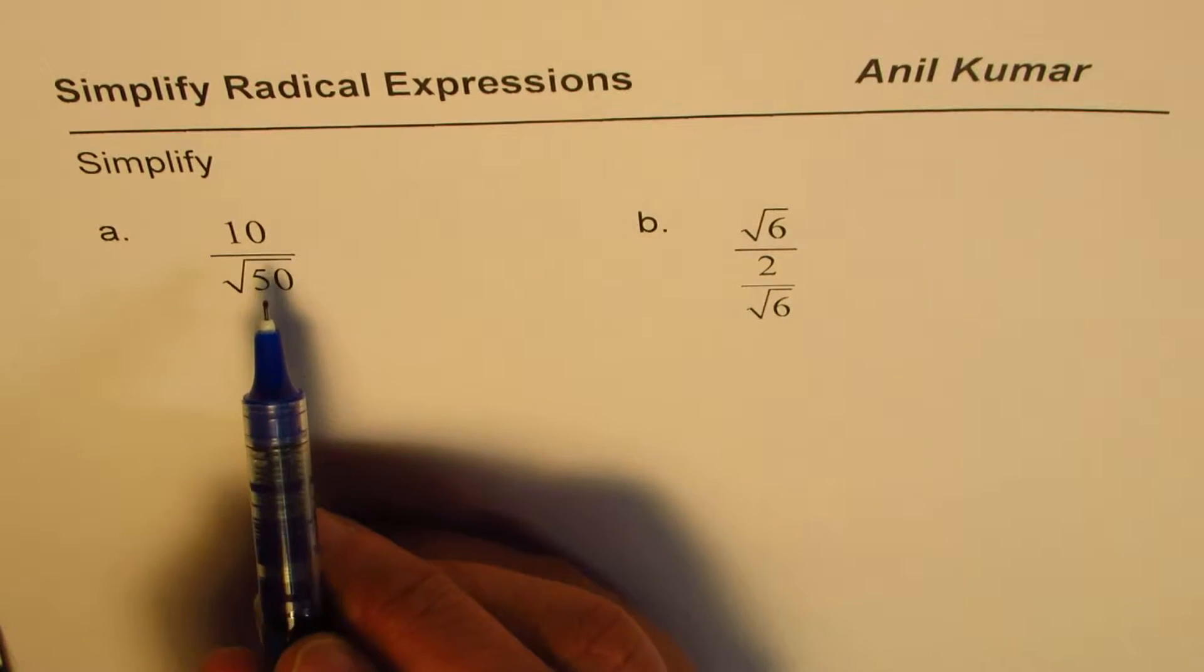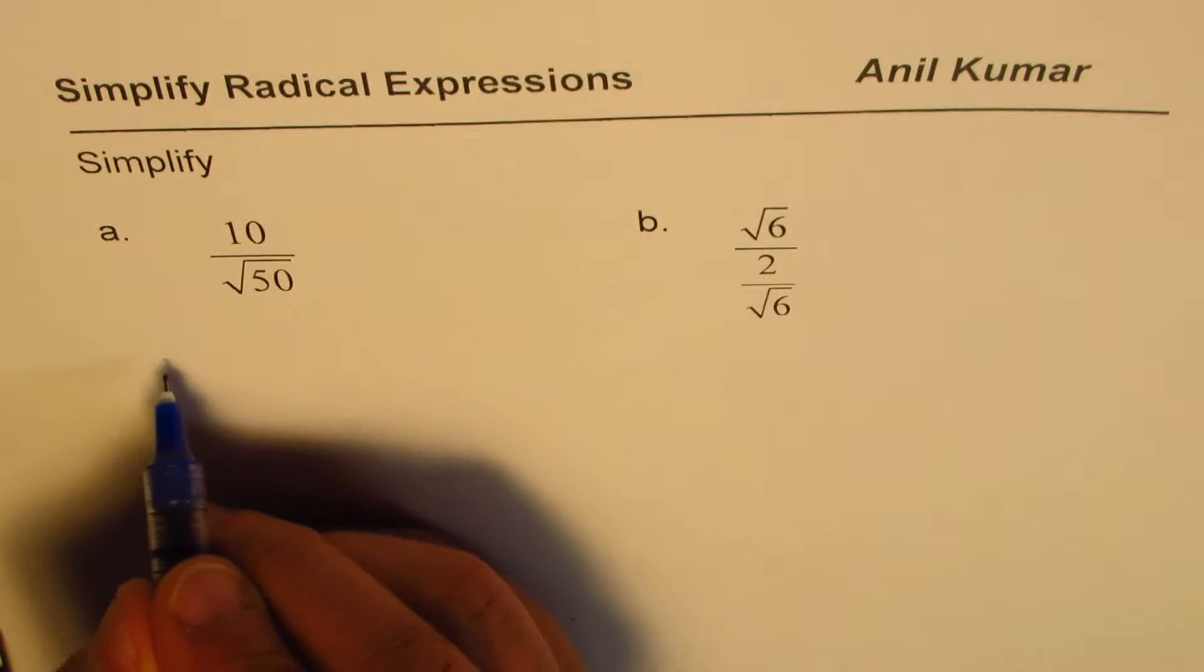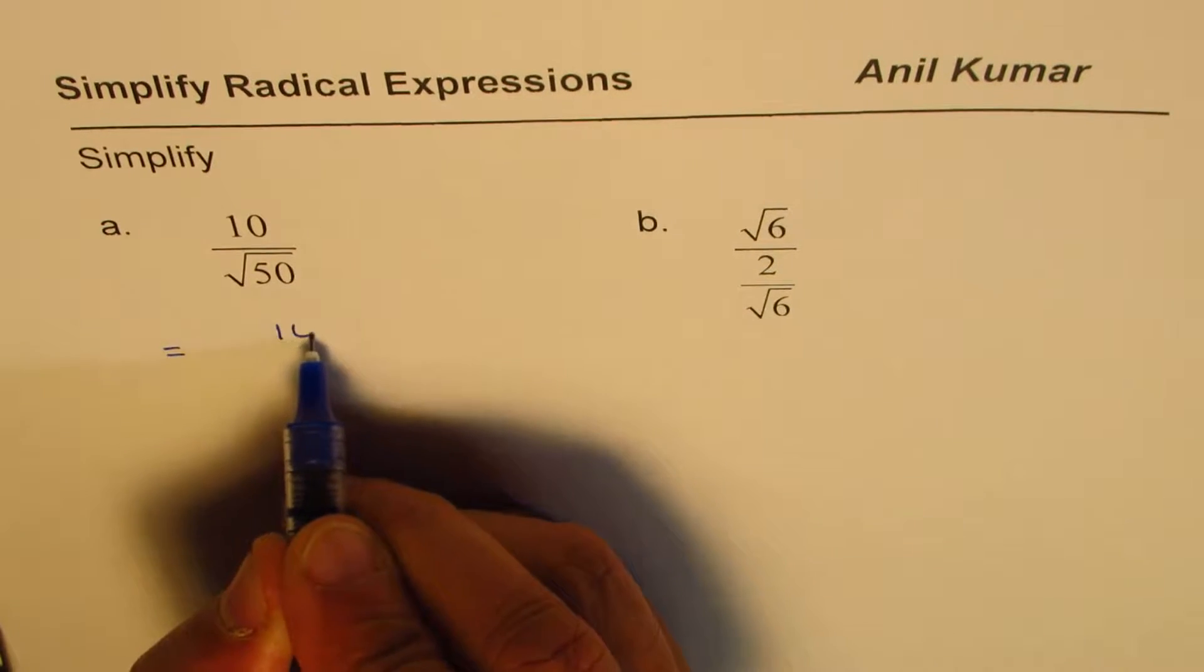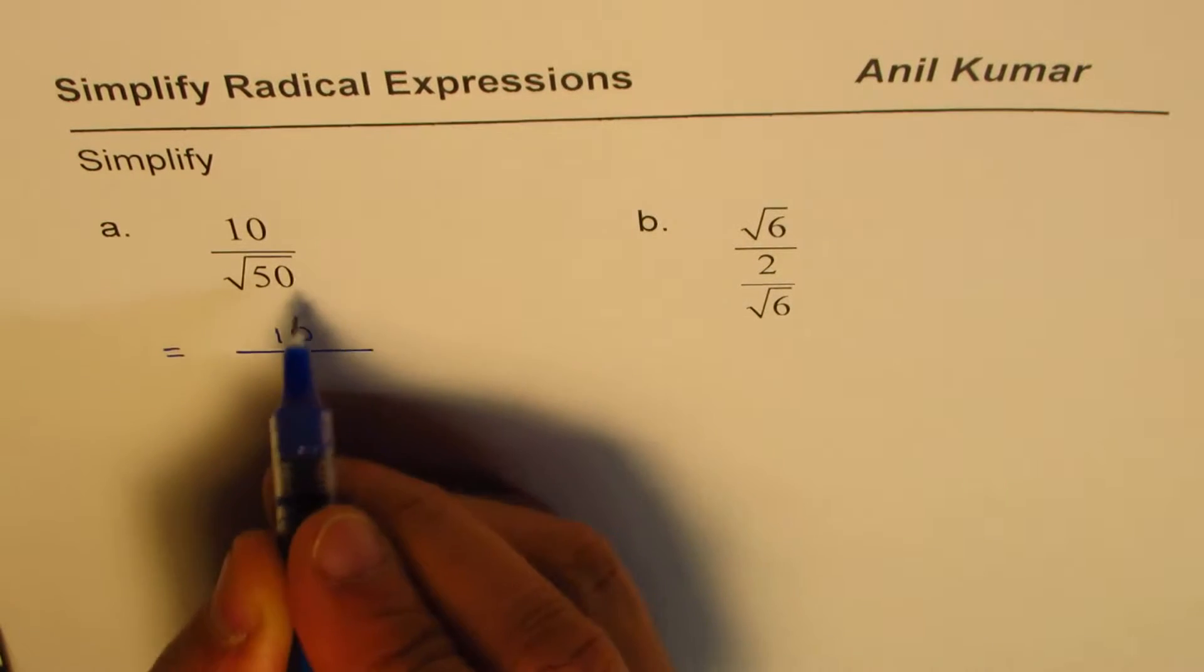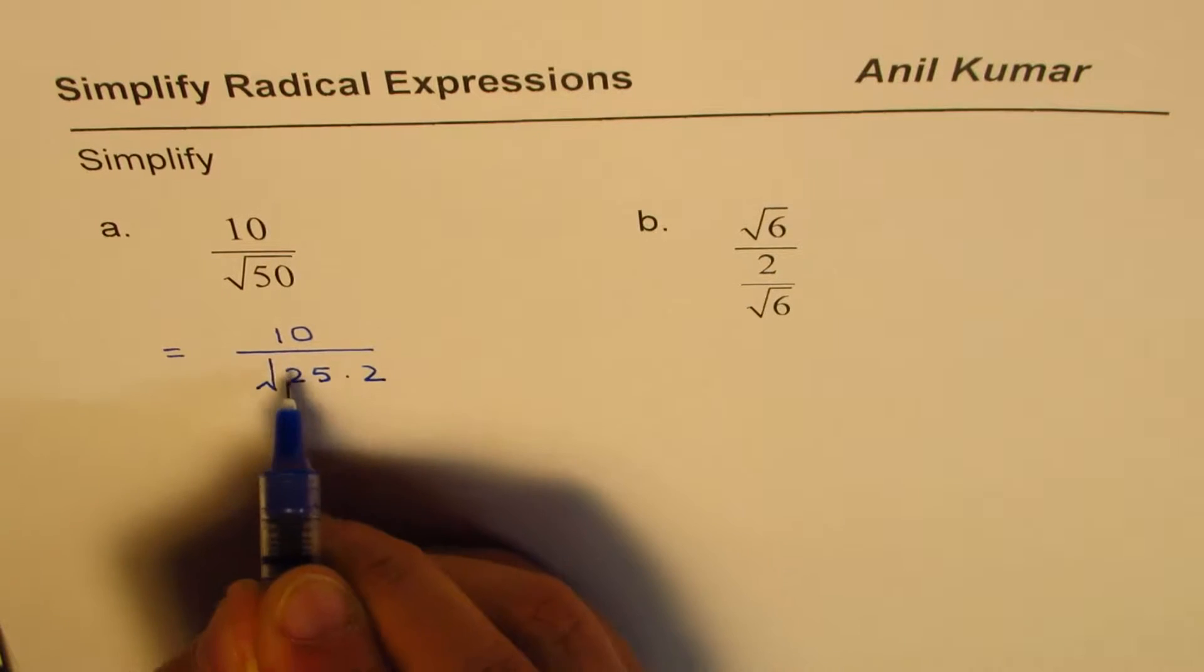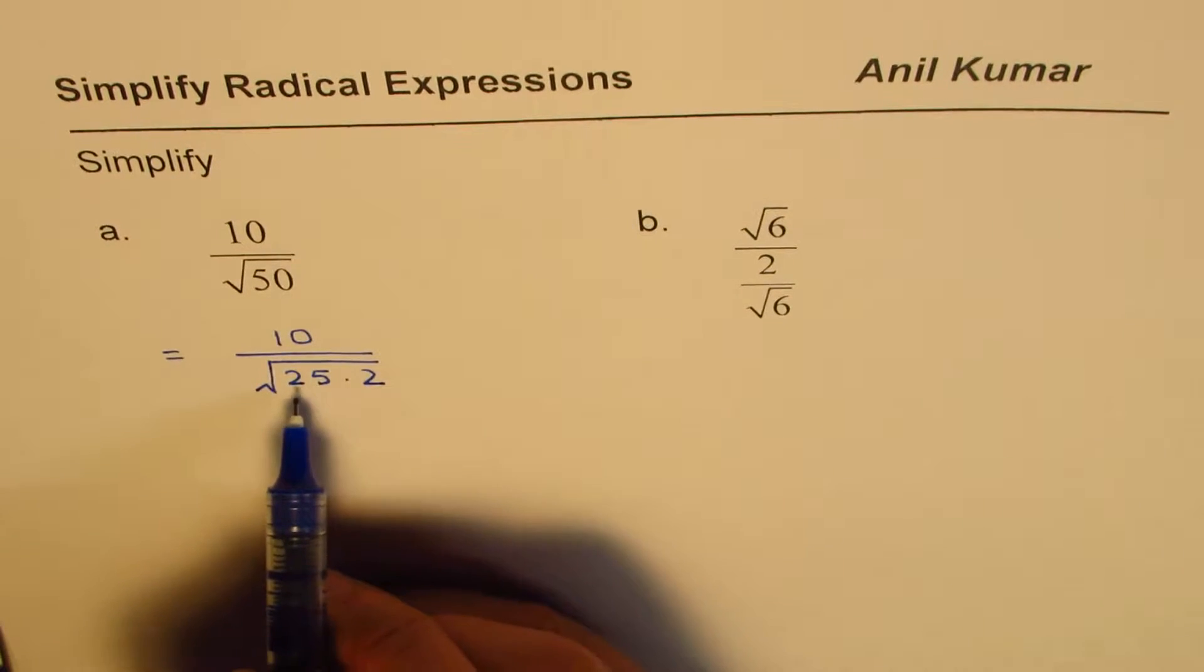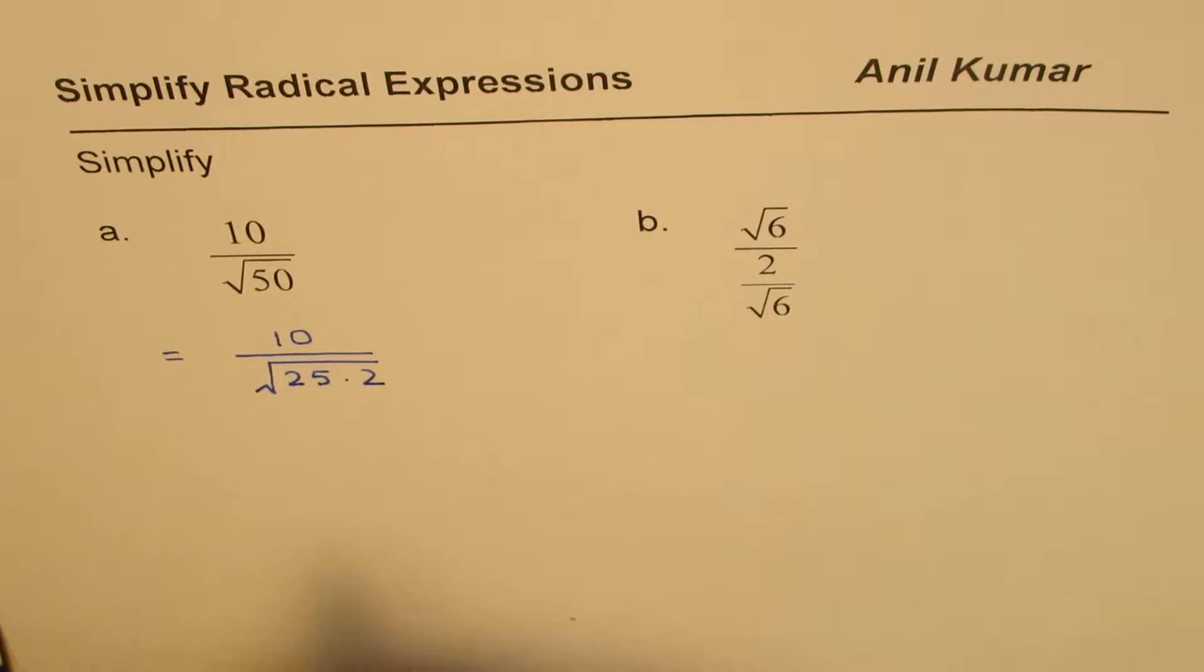Let's begin with the first one, which is 10 divided by square root of 50. We can write this as 10 divided by square root of 50, which can be written as 25 times 2. The idea is to write the number as factors which have perfect squares. So 25 is a perfect square.